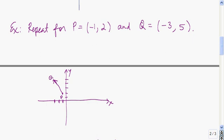For this next vector PQ, the x-coordinate of P is -1 and the x-coordinate of Q is -3, so we go two units left, giving an x-component of -2. The y-coordinate of P is 2 and the y-coordinate of Q is 5, so we go up three units from P to Q, meaning the y-component is 3.